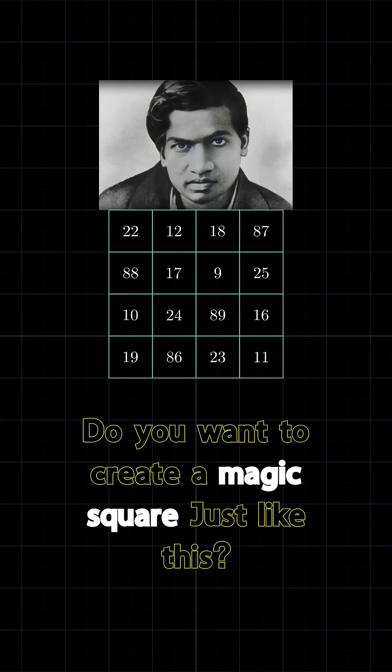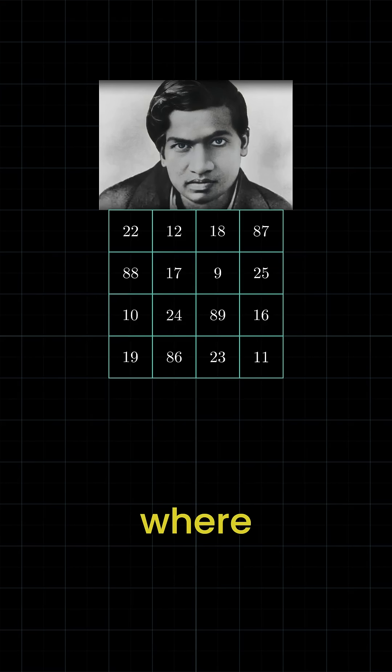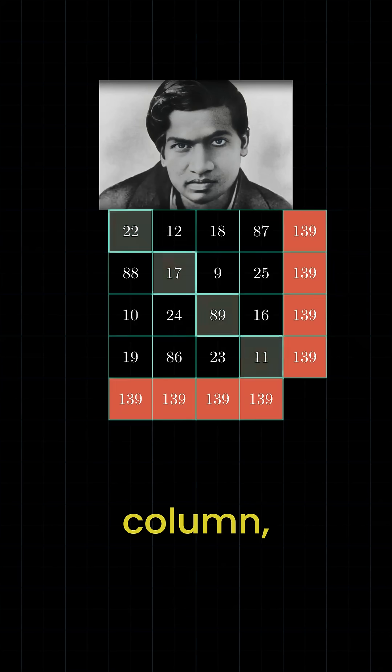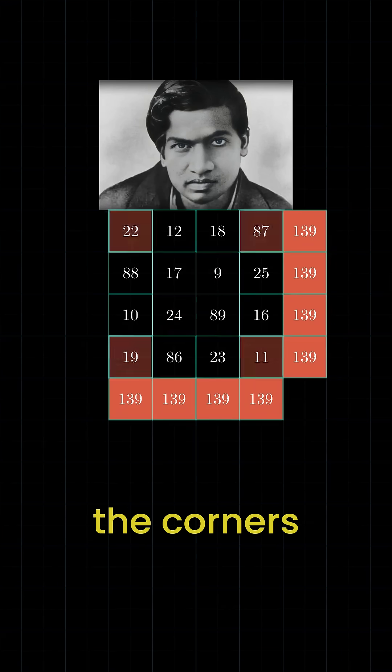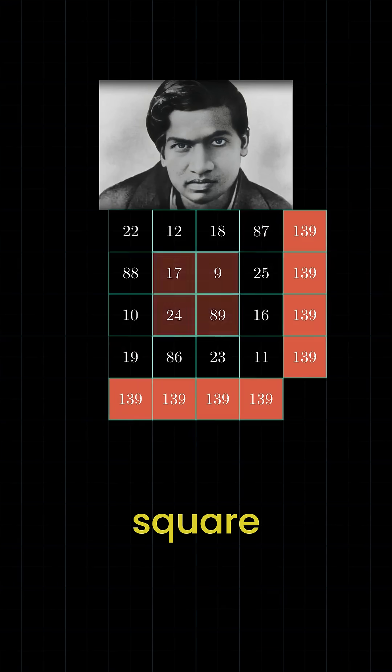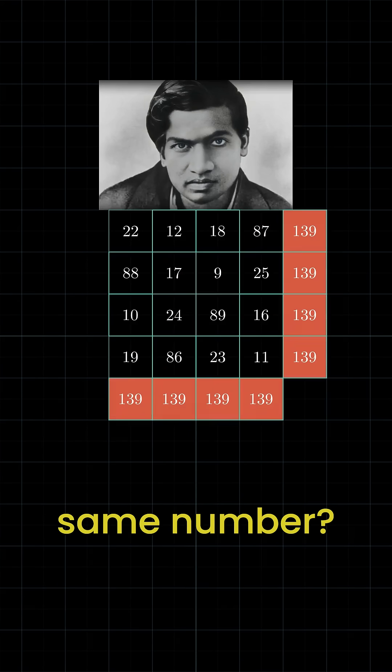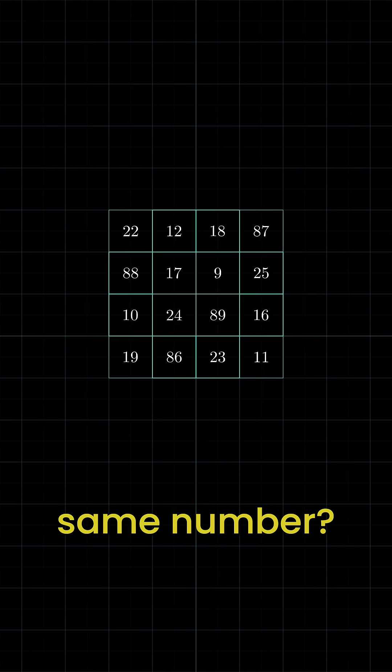Do you want to create a magic square just like this, where every row, column, diagonal, and even the corners and the center square all add up to the same number?